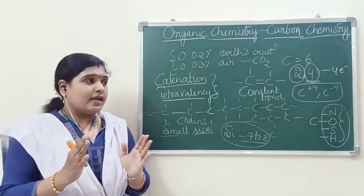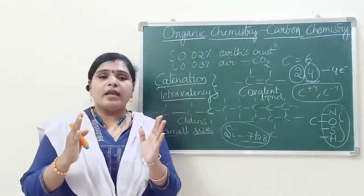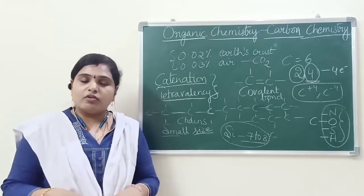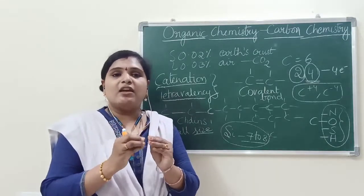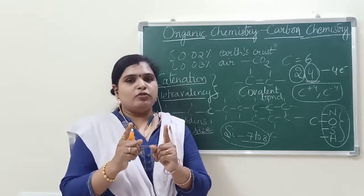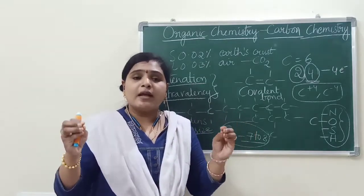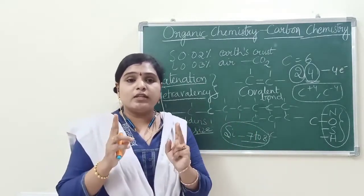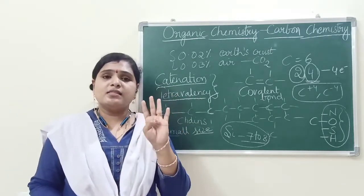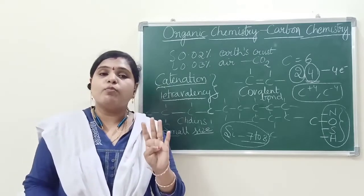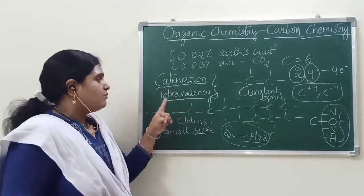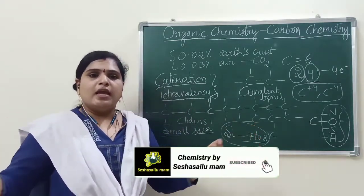Carbon is small in size. It cannot form ionic bond. It cannot lose all the four electrons. It cannot gain all the four electrons. So simply it will share the electrons and it will form covalent bond. That point you need to remember. And so many compounds of carbon are there because of two reasons. What are the two reasons? Catenation and tetravalency. Tetravalency means valency is four. It can form four bonds with four other atoms. That is one advantage. At the same time it can form long long chains.